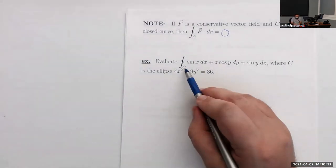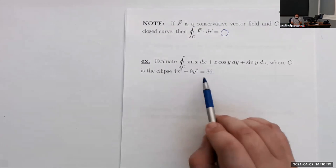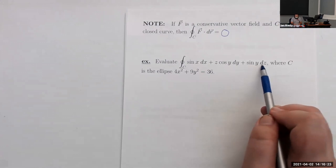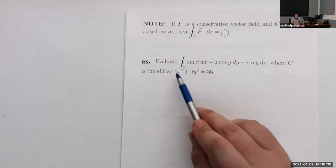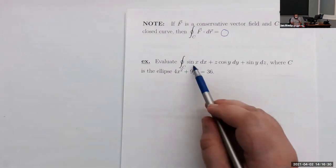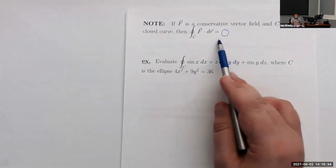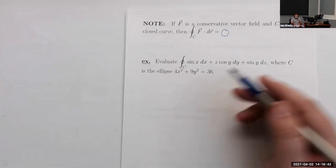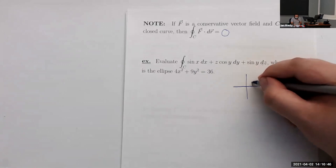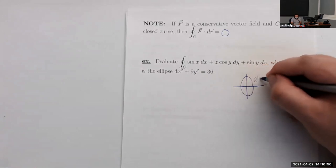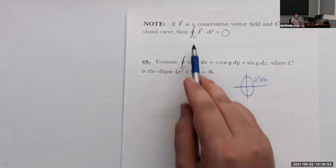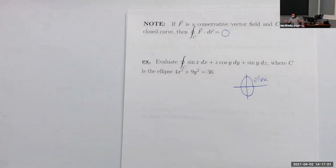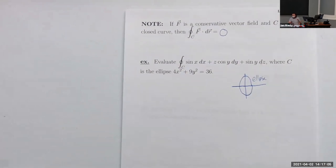Let's evaluate the integral along a closed curve, which is an ellipse: the integral of sin(x) dx + z cos(y) dy + sin(y) dz. We could find a parameterization of the ellipse and substitute it in and do the integral manually, but based on what we just saw, we might be able to avoid a lot of that work. An ellipse is a closed curve, so if we can check whether this vector field is conservative, we could just say the integral is zero.